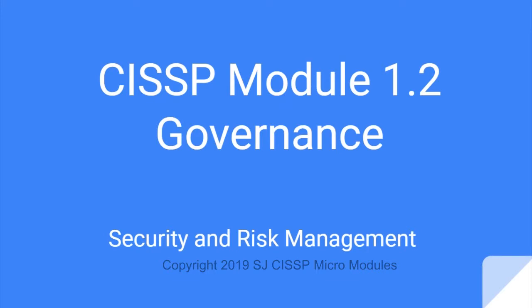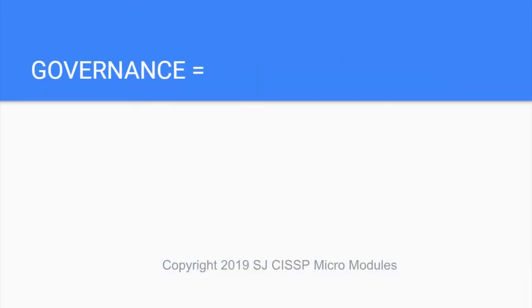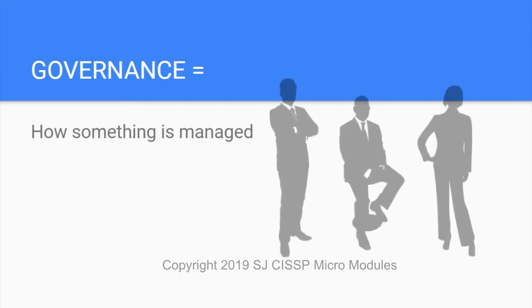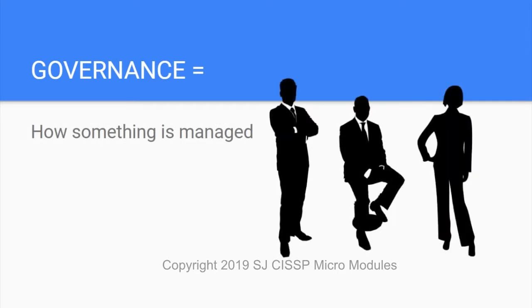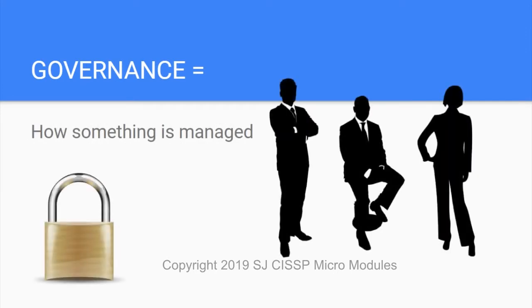Governance is basically how an organization is managed. Security Governance is how security is managed through policies, roles, and processes used to make security decisions.